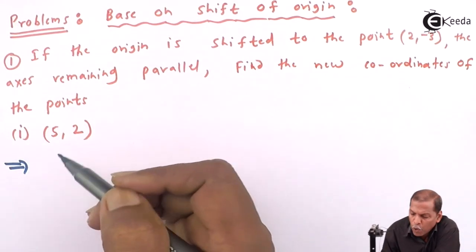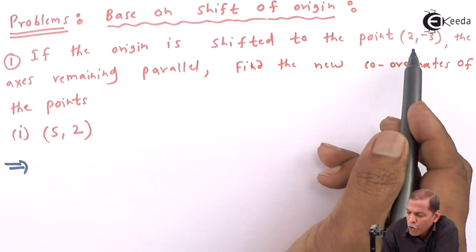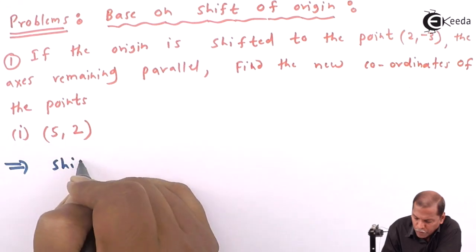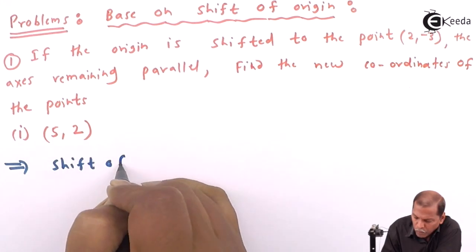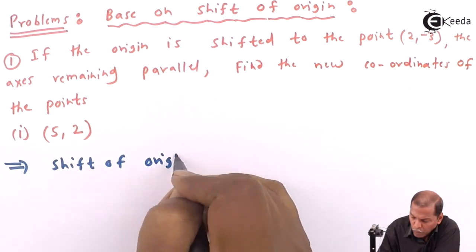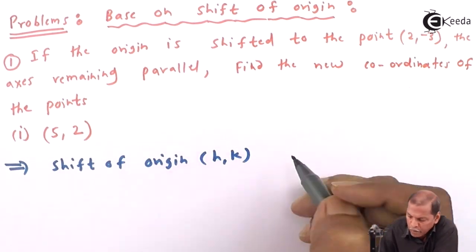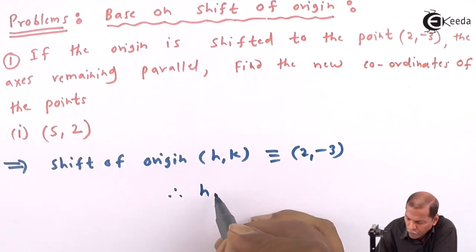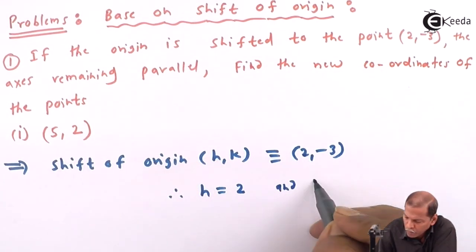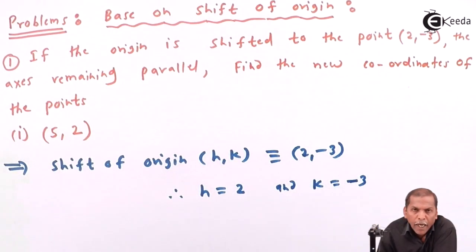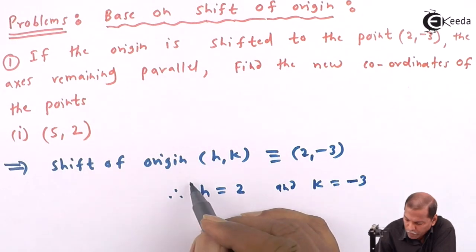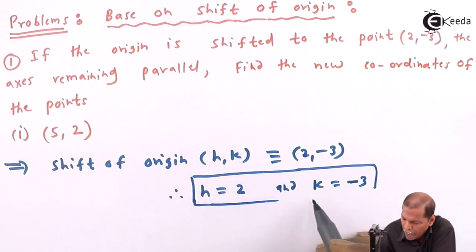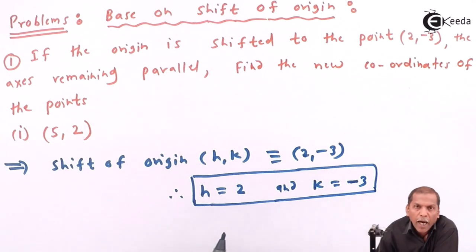In this case, the origin is shifted to the point. Shift of origin means h, k is equivalent to that point, so from that we get h equal to 2 and k equal to minus 3. In this way we get the values of h and k.